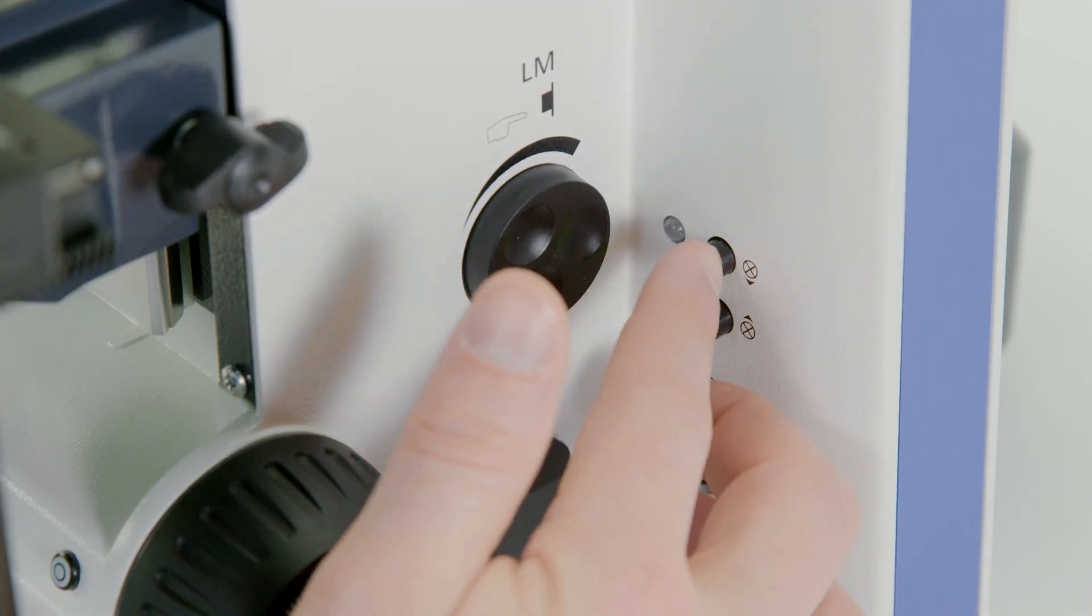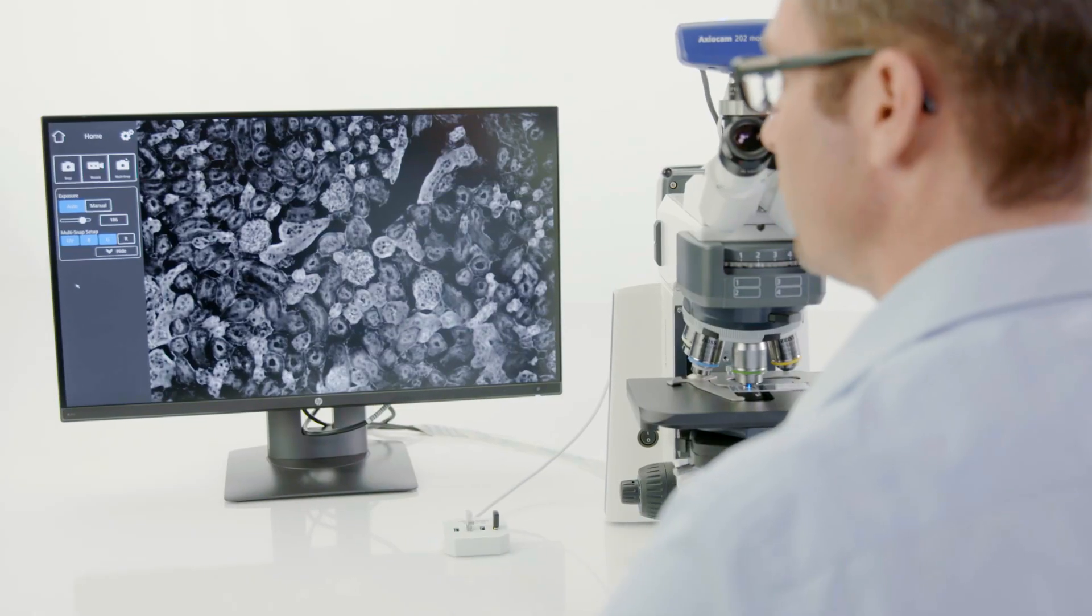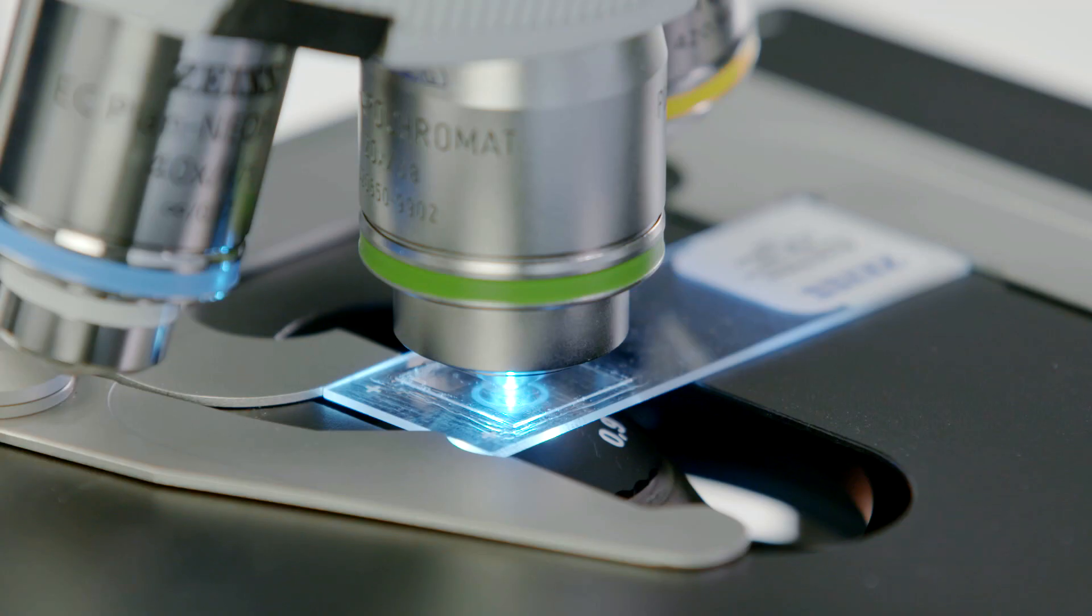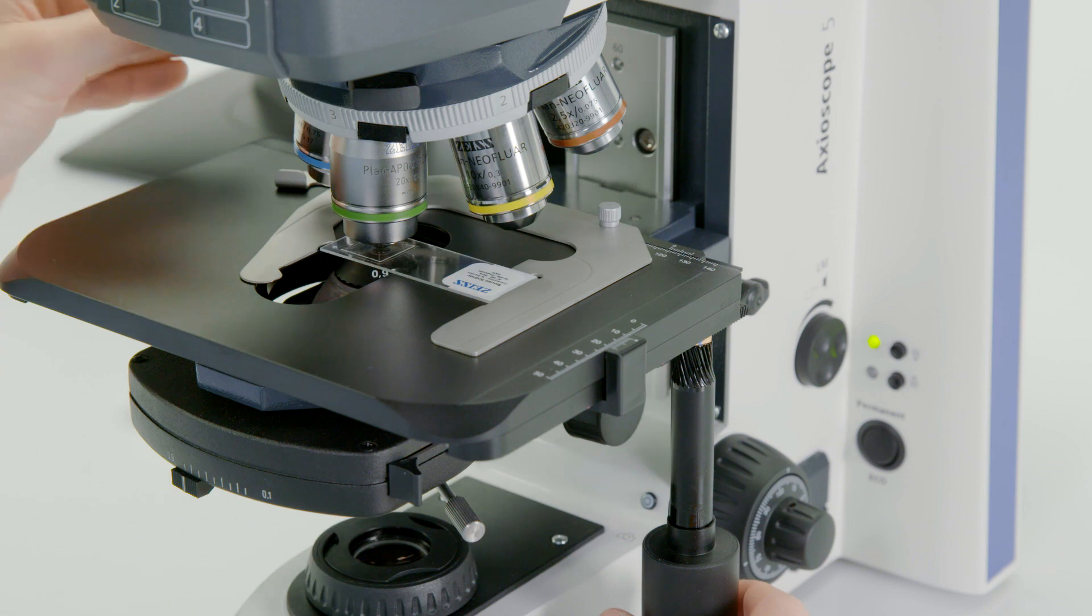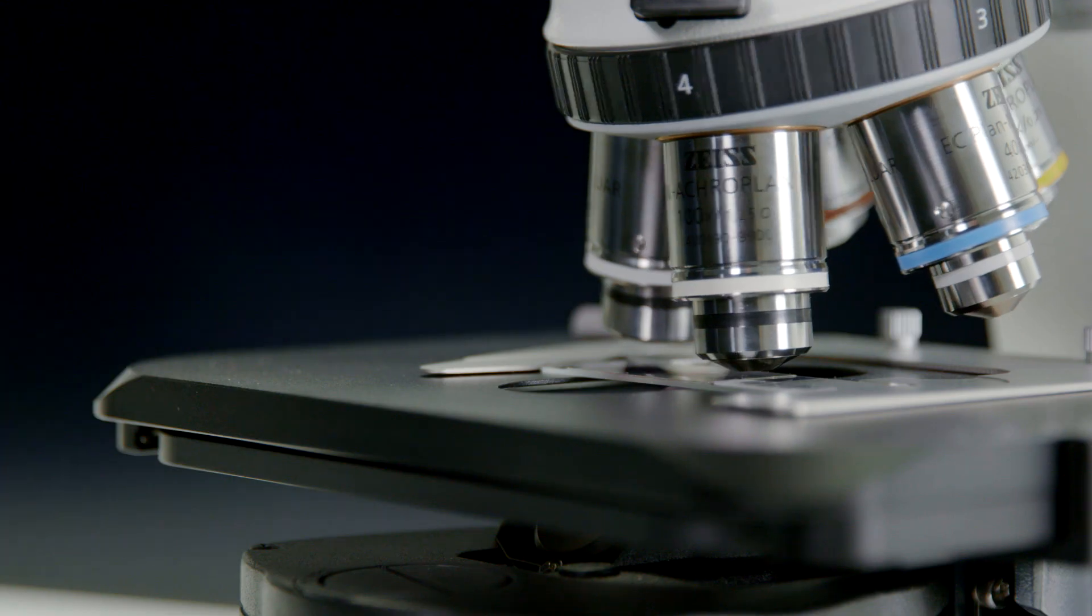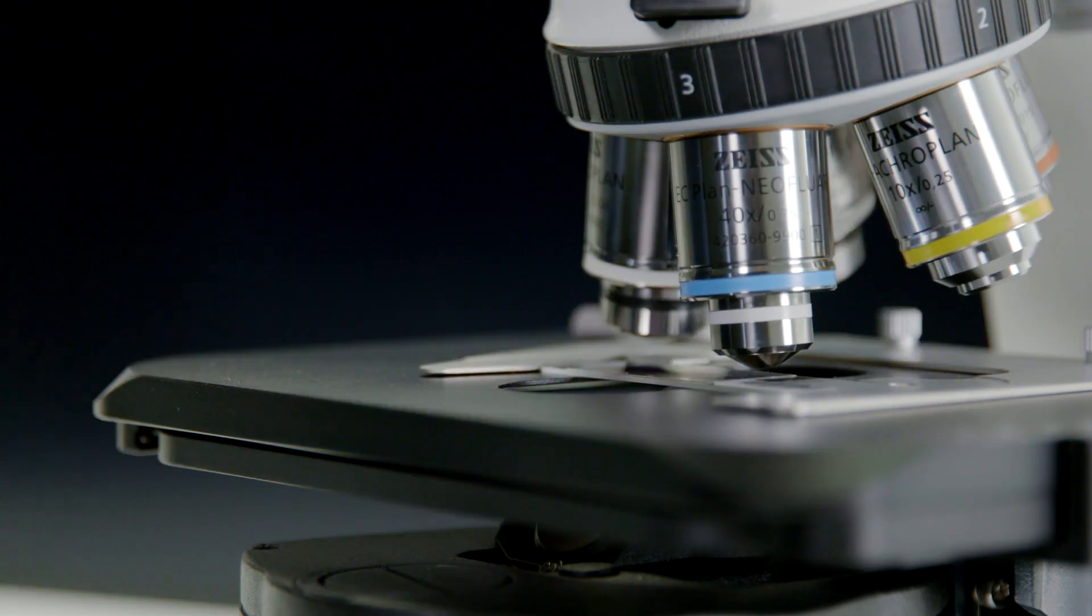Now you're ready to switch to the fluorescence mode on your Axioscope 5 microscope. Toggle to the UV LED since DAPI provides a strong fluorescent signal. Use a low magnification objective to locate and focus your sample, then switch to the magnification you need.